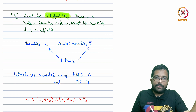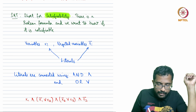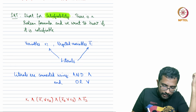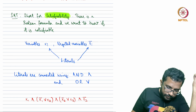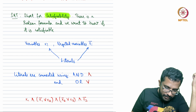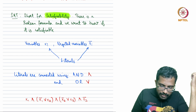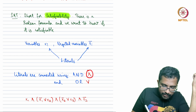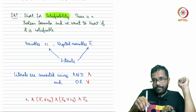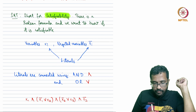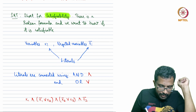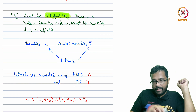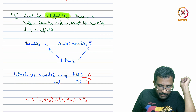Variables and negated variables are connected using two logical connectors. One of them is AND, depicted as an inverted V or an A without a bar. The other is OR, depicted like a V.